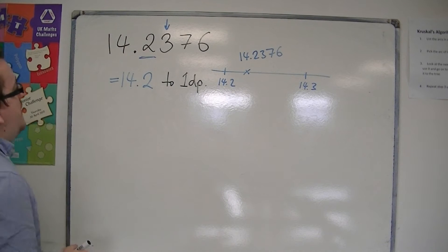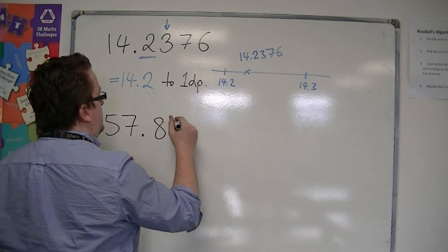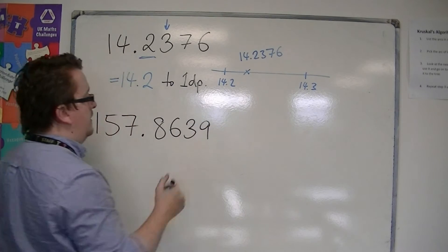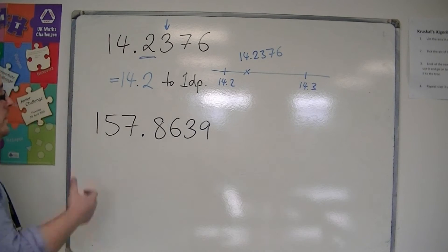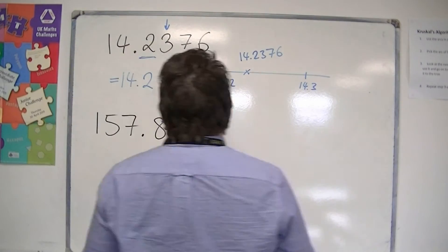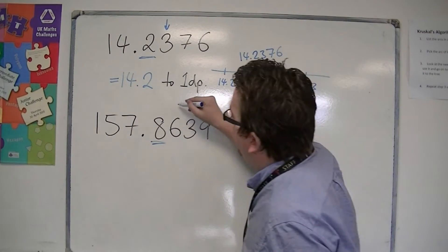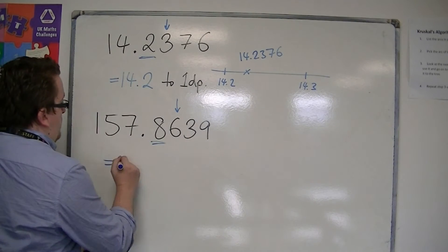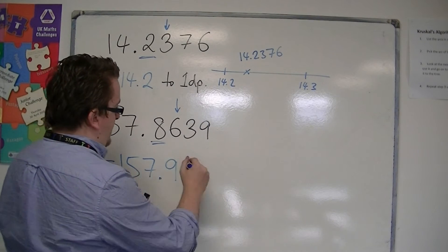So then if I looked at 157.8639 and we're thinking along the same lines that this is a length that I need to draw and I can only do it to one decimal place. Then, what we're looking at here is the first decimal place. We look one to the right. It tells us that it is five or more, so we round up. So this would be rounded to 157.9 to one decimal place.